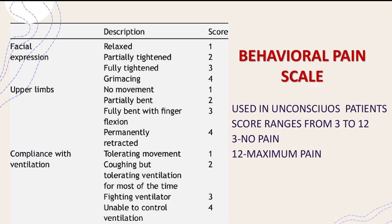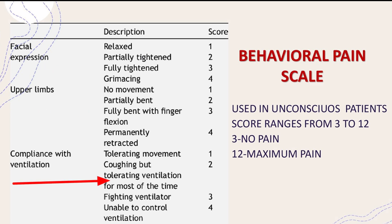Now let us see some pain scales used in the critical care area. The first one is the behavioral pain scale, which is used for ventilator patients. Here we assess facial expressions, upper limb movements, and compliance with the ventilator.